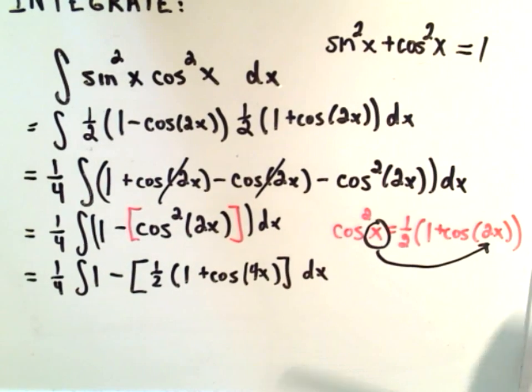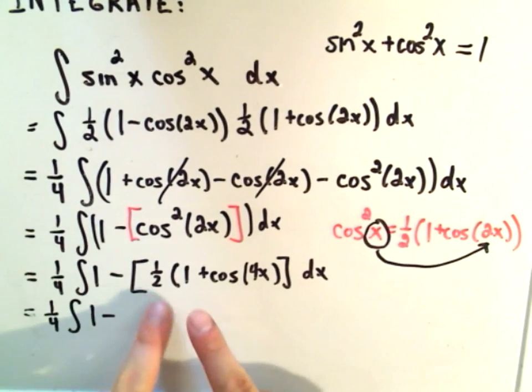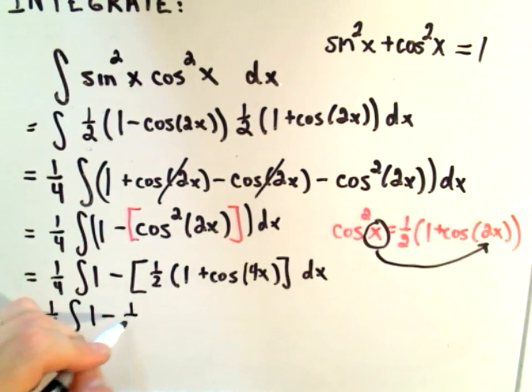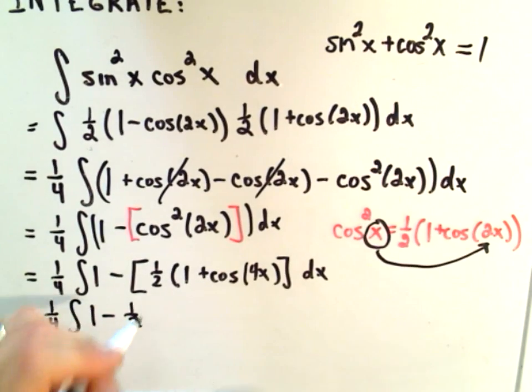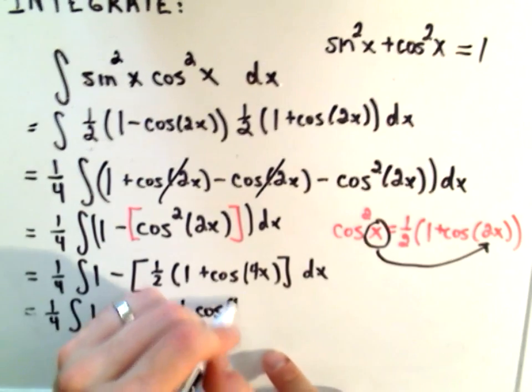Now I'll clean this up. One-fourth is out front. You'd have one minus, if you distribute the half, you get a one-half. Then we'll get a minus one-half cosine of 4x.